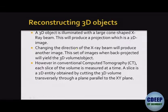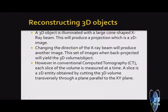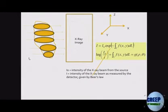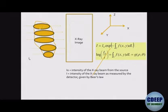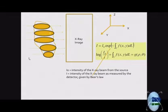In many CT protocols, each slice of a person's body is measured one at a time. X-ray beams are shot at a particular slice parallel to the ground plane to get 1D Radon projections for that slice. Then the beam is lowered to the next slice position to get another set of projections, and so on.